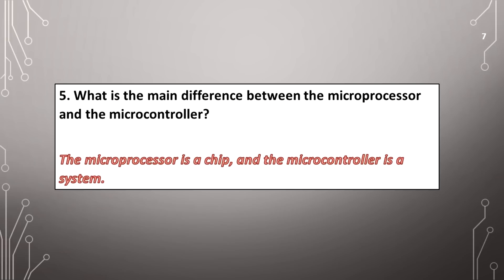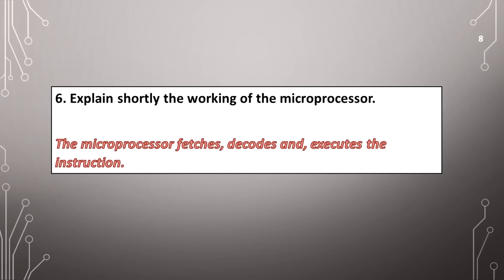What is the main difference between the microprocessor and the microcontroller? The microprocessor is a chip and the microcontroller is a system. The microprocessor fetches, decodes, and executes the instruction.